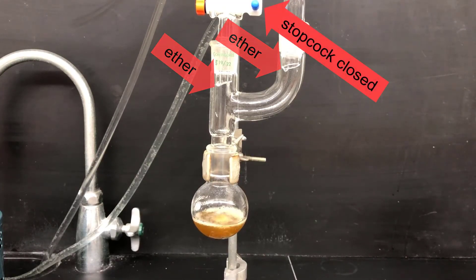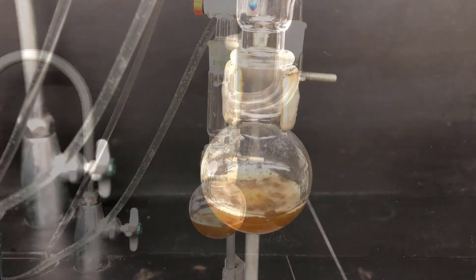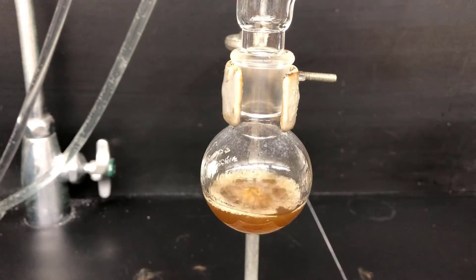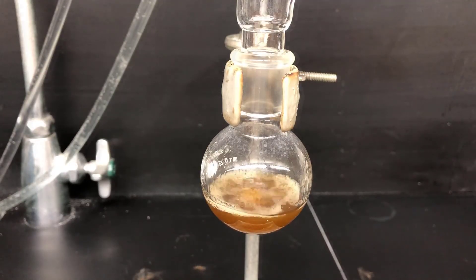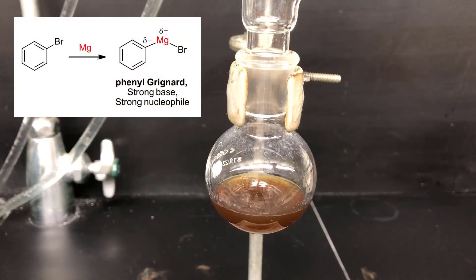Notice here I have the addition funnel stopcock closed. That keeps ether from escaping out of the apparatus. The reaction should boil for about 15 minutes under its own heat, and then the reaction will slow down, peter out, and look something like this. The formation of phenyl magnesium bromide is now complete.